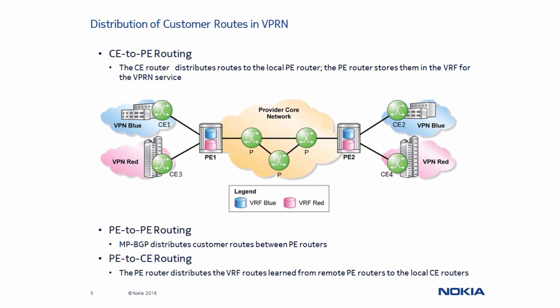There are several aspects to the distribution of routing information in a VPRN. As we see in this example, CE1 and CE3 first peer with local router PE1 to distribute their routes. In order to isolate the routes received from each customer, PE1 creates separate VRF tables for the blue and red VPRN services. PE1 then distributes the routes to PE2 using the MPBGP protocol. PE2 stores the learned routes in separate VRF tables and finally distributes them to CE2 and CE4.